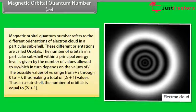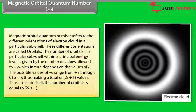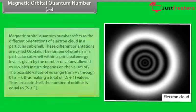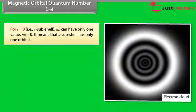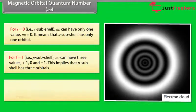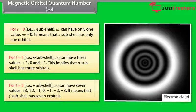Magnetic Orbital Quantum Number (ML): This refers to the different orientations of the electron cloud in a particular subshell, and these different orientations are called orbitals. The number of orbitals in a subshell is given by 2L+1, where ML ranges from +L through 0 to −L. For L=0, ML=0 only, so the s subshell has one orbital. For L=1, ML = +1, 0, −1, so the p subshell has three orbitals. For L=3, ML = +3, +2, +1, 0, −1, −2, −3, so the f subshell has seven orbitals.